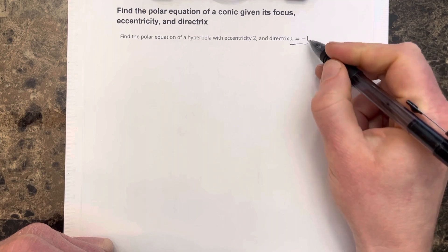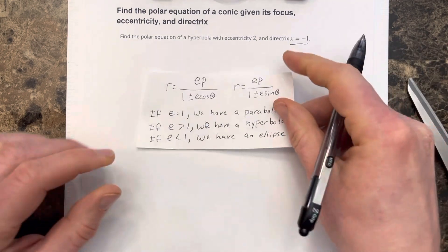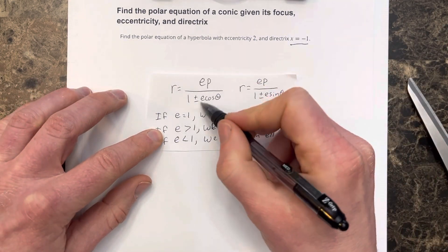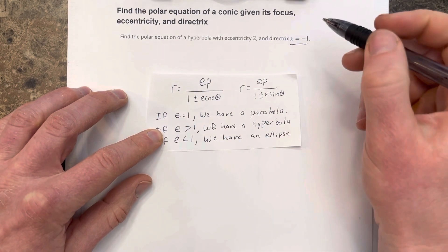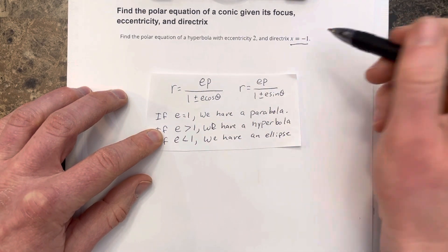Because we have x equal negative 1, that's a vertical line at negative 1. That tells us we're going to use the equation with cosine because this thing is opening to the left and to the right.